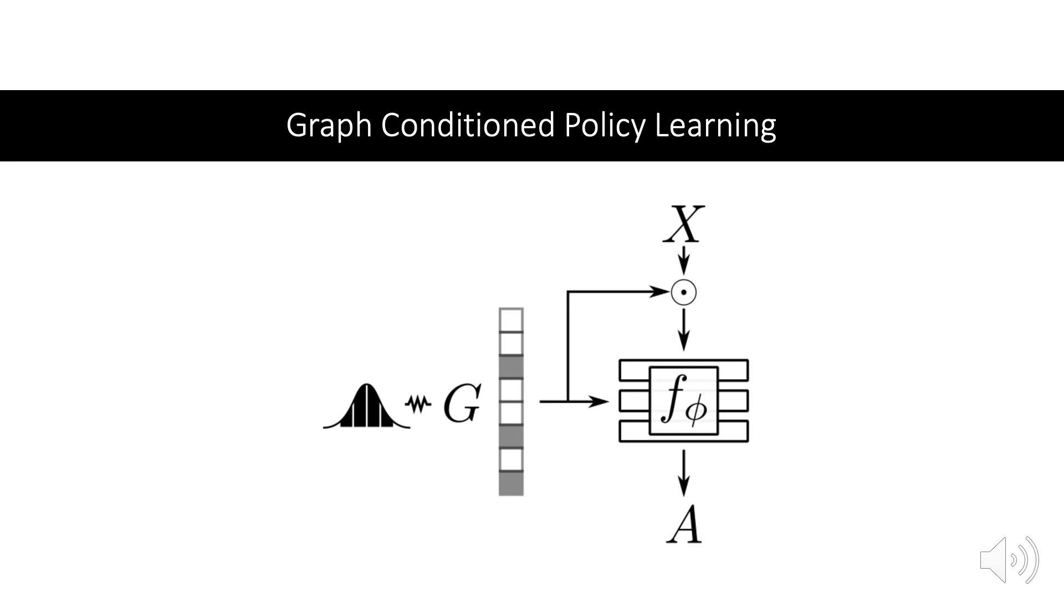We learn a policy for all 2 to the n graphs, but parameterize these with a single neural network. During training, we uniformly sample a graph, which acts as a mask on the input variables. The graph is additionally concatenated to the masked input. Then the neural network predicts the action and is trained with a supervised learning loss.